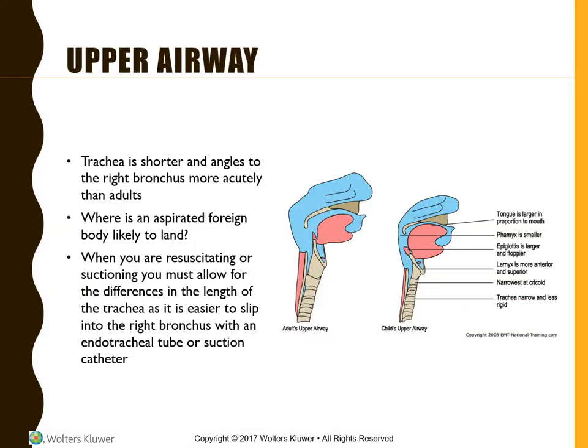A child's airway is highly compliant, making it susceptible to collapse during airway obstruction. The trachea is shorter and angles to the right bronchus more acutely than in adults. The trachea is located at the third thoracic vertebrae in children, as opposed to the sixth in adults. This difference is especially important when thinking about suctioning children and assessing for aspiration risk. If we have an aspirated foreign body, it's likely to land in that right bronchus.